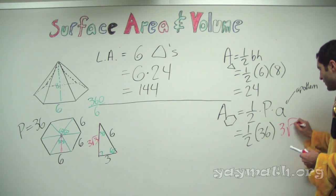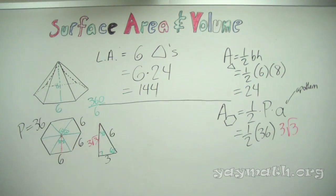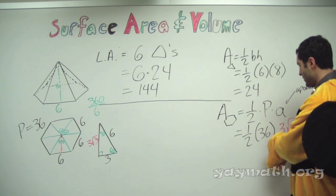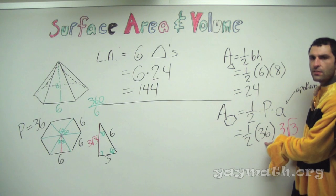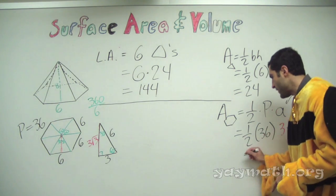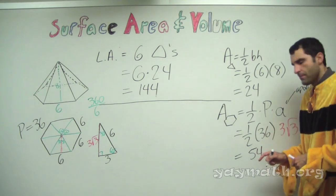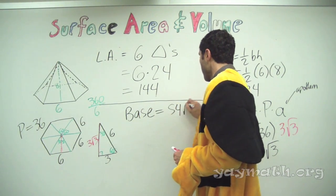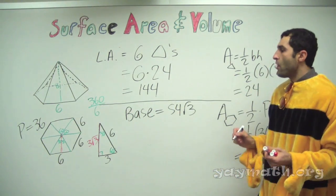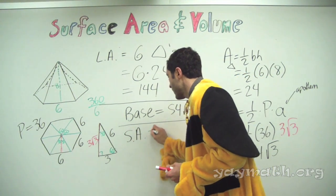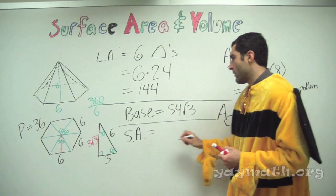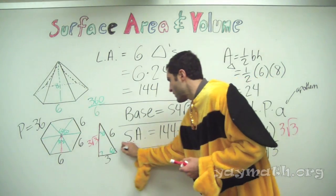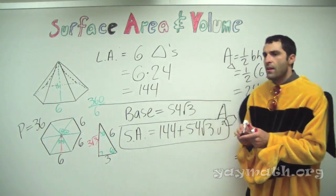Multiply that out and write the total surface area. The base area: one half times thirty-six times three root three. That's eighteen times three root three, which is fifty-four root three. So the base area equals fifty-four root three. And now the total surface area is fifty-four root three plus 144. They do not combine — they are not like terms — and this problem is done.